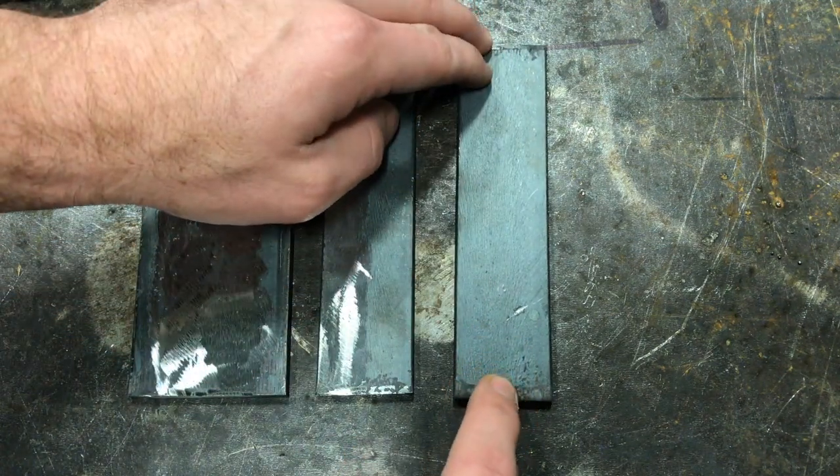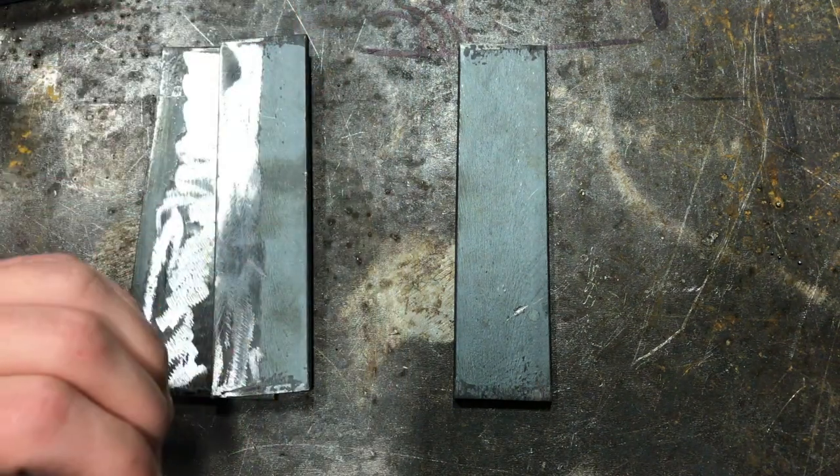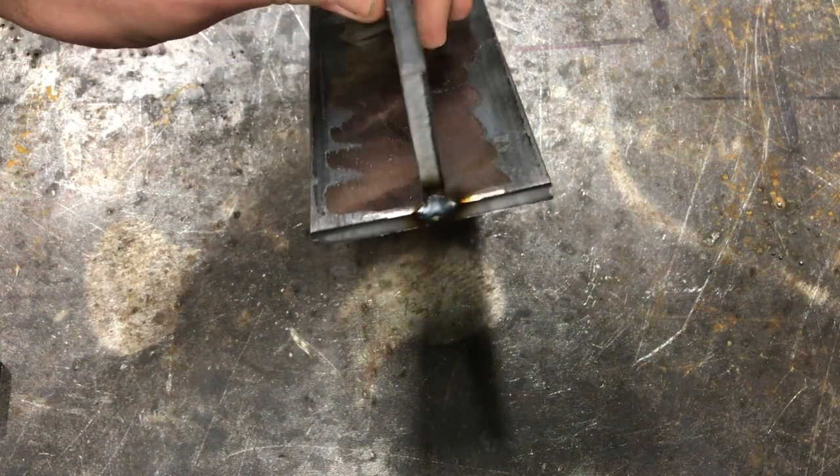But we are going to be dealing with this mill scale, so you want to make sure you get it cleaned off. So what I'm going to go ahead and do now is I'm going to tack up this T-joint and then I want to talk a little bit about fitment.